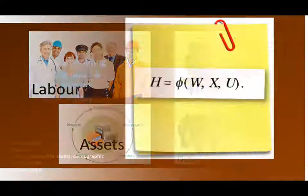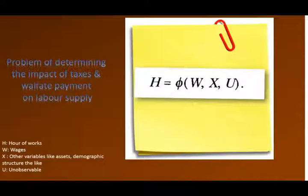Following the conventional theory of consumer demand, write an interior solution labor supply equation of hours of work, H, in terms of wages, W, and other variables including assets, demographic structure, and the like. Denote the other variables by X. Let U denote an unobservable from the point of view of the observing economist.